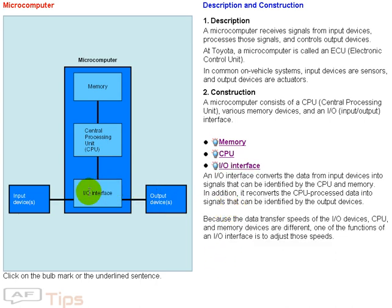An I/O interface converts the data from input devices into signals that can be identified by the CPU and memory. In addition, it reconverts the CPU process data into signals that can be identified by the output devices. Because the data transfer speeds of the I/O devices, CPU, and memory devices are different, one of the functions of an I/O interface is to adjust those speeds.